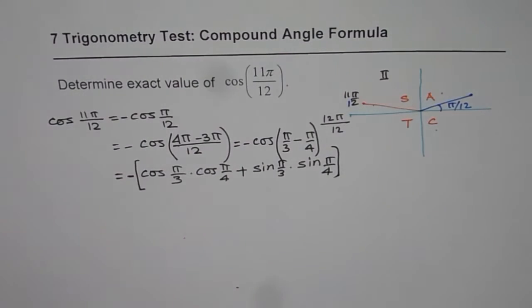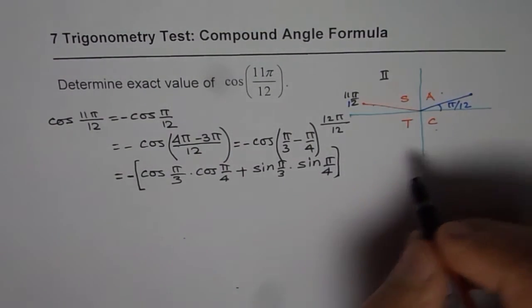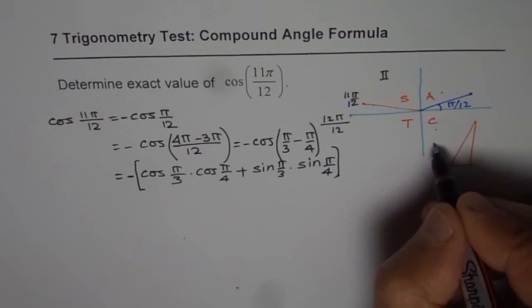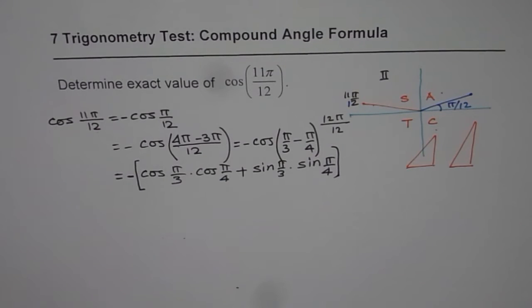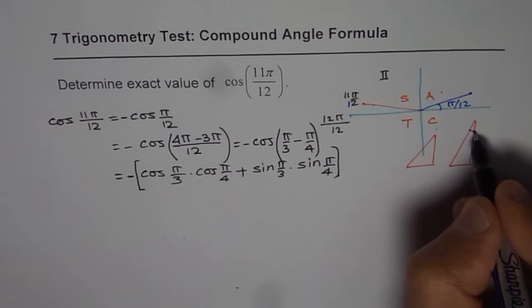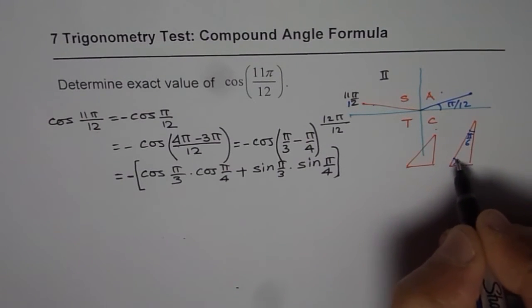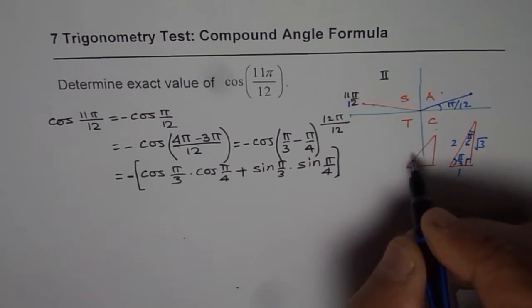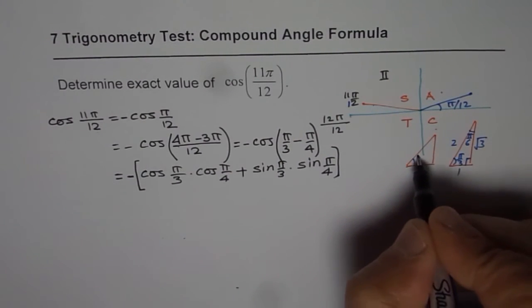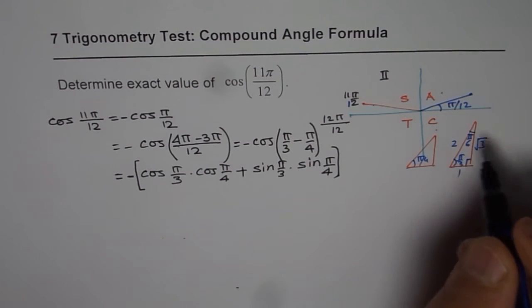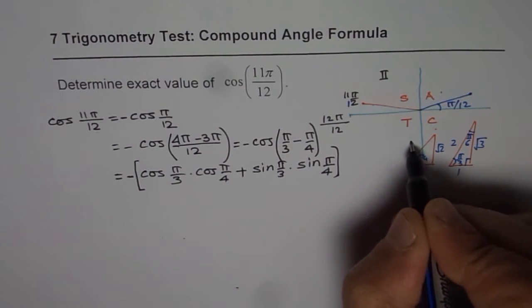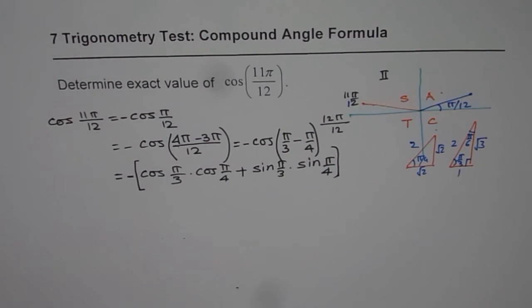And we can use the special triangles which are for pi by 3 and pi by 4. So we get these two triangles. This is for pi by 3 and that is for pi by 4. The angle pi by 3 is here. I mean this is pi by 6. Pi by 3 is here. And the sides are 1, 2, square root 3. For this angle we have pi by 4. So it is better to use square root 2 as a side. That will give us 2 here, right?